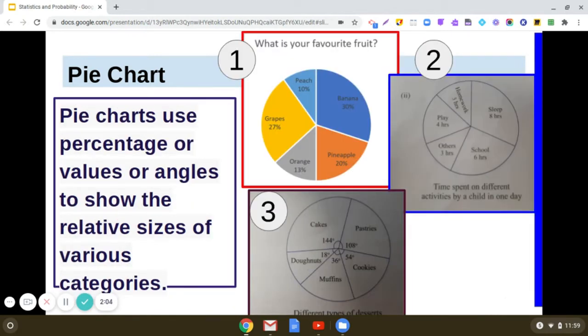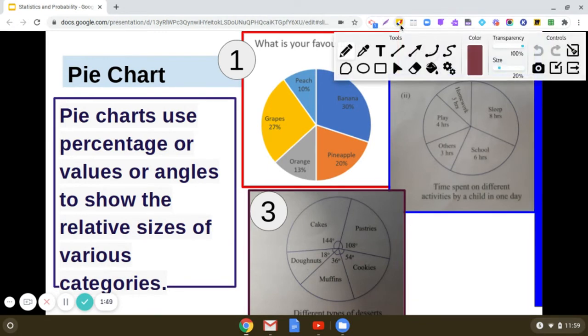Now you can see on the screen three pie charts. It's a beautiful representation. In the first figure, this pie chart is representing the percentage of items. The pie chart asks, what is your favorite fruit?